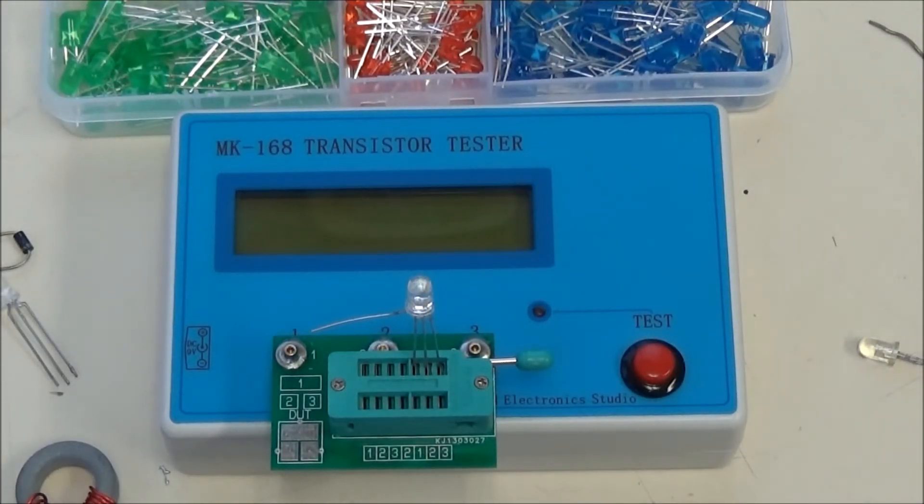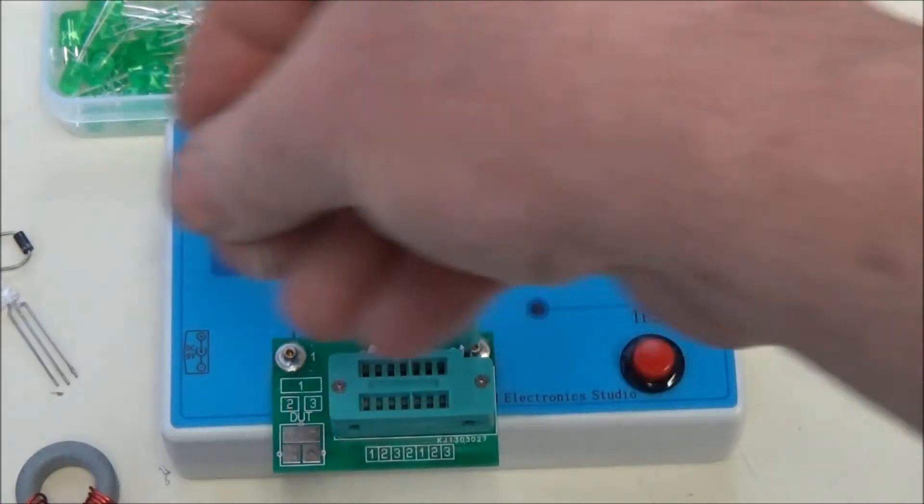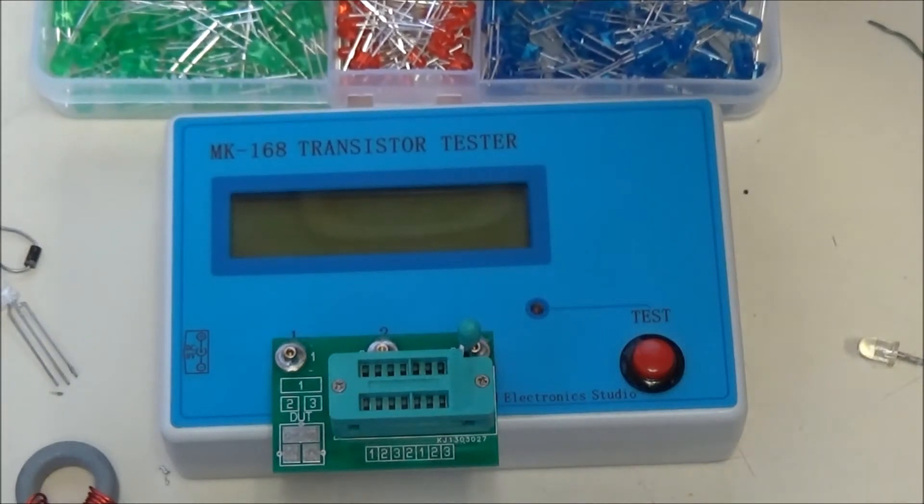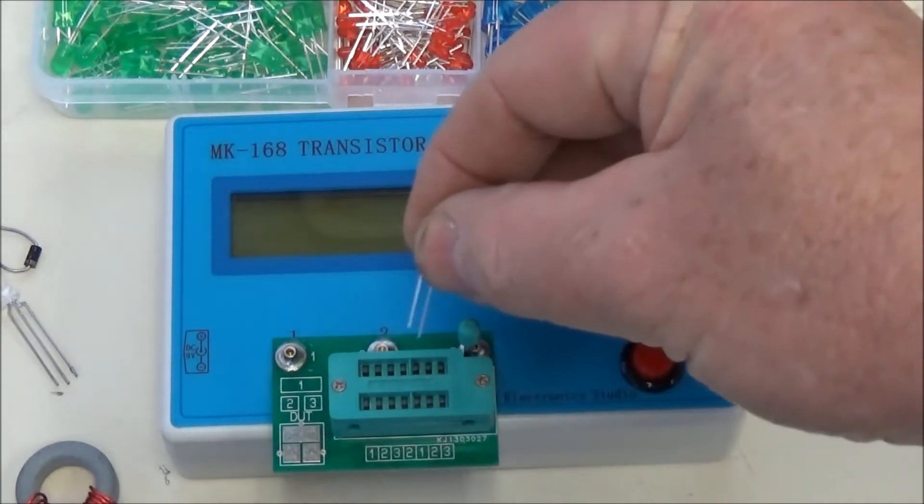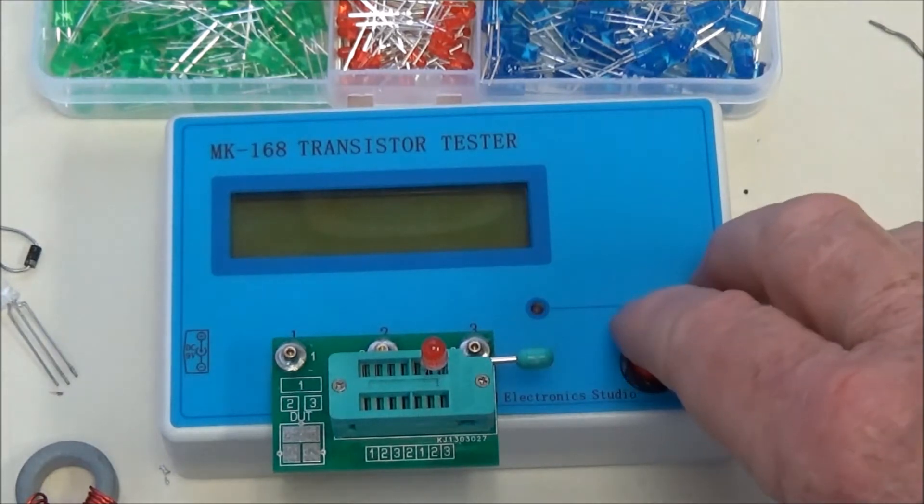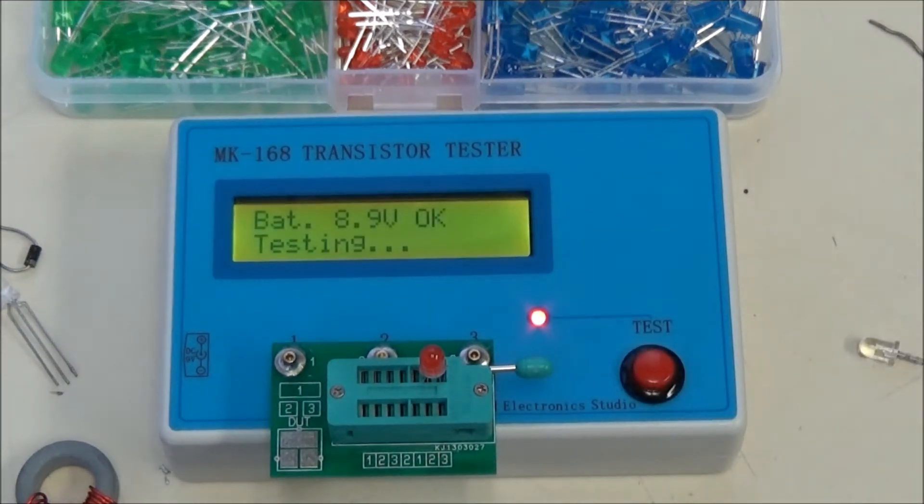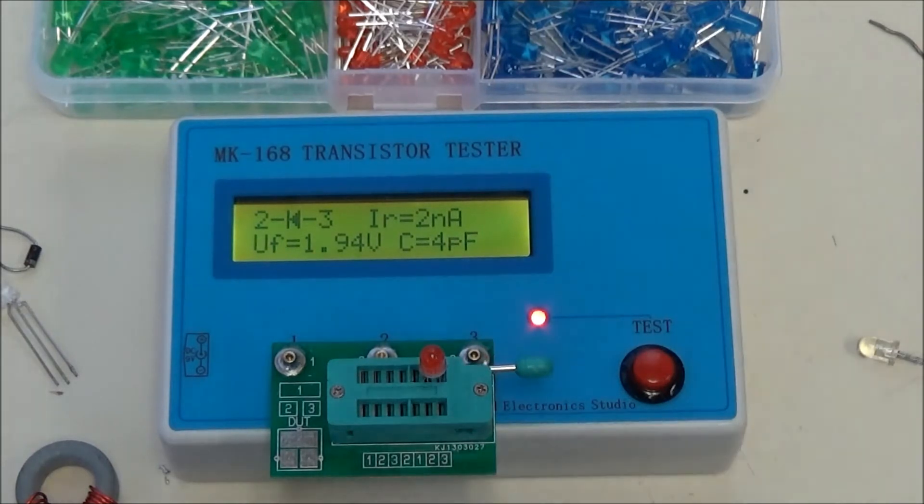Let's check one more LED. If you heard some background noise earlier, we have an absolute deluge here in Bristol. Here we are in the middle of April, it's still not warmed up and every time we get a warm front it dumps rain. Let's see what the voltage on the red LED is - 1.94 volts and a capacitance of 4 picofarads. So that's how you test LEDs.